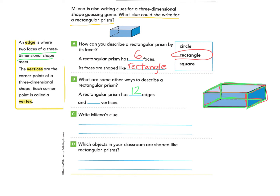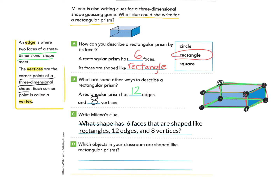Now let's take a look at vertices — the corner points of a three-dimensional shape. Counting: one, two, three, four, five, six, seven, eight. So we have eight vertices. Now we're ready to write Milena's clue: What shape has six faces that are shaped like rectangles, 12 edges, and eight vertices?